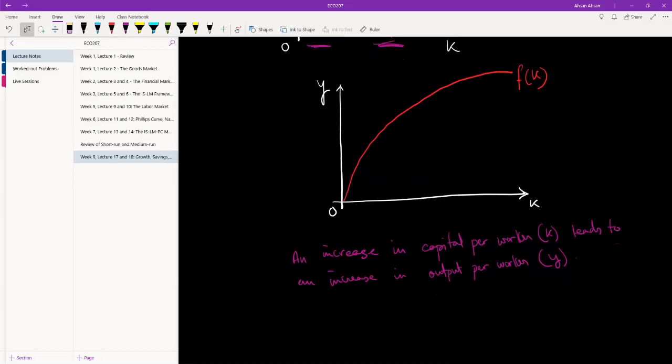If our output is increasing but at the same time population is increasing, that may not really represent growth. By growth what we mean is improvement in standard of living. If our output doubled but our population doubled, that's not really an improvement in standard of living. What we want is an increase in output per worker, which means the rate at which our output is increasing is higher than the rate at which our population is increasing.